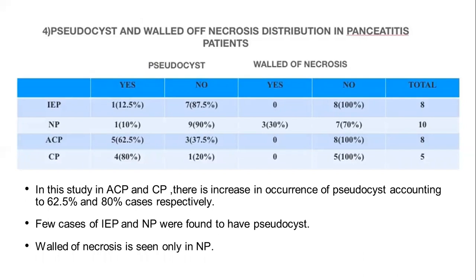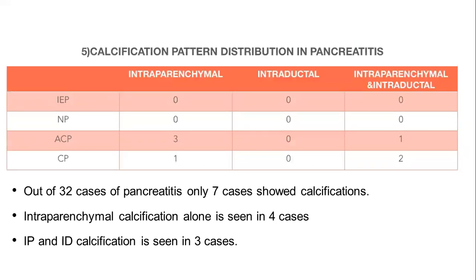Pseudocyst and wall of necrosis distribution in pancreatitis patients. In this study, acute on chronic pancreatitis and chronic pancreatitis show an increase in occurrence of pseudocyst, accounting for 62.5% and 80% of cases respectively. Few cases of interstitial edematous pancreatitis and necrotizing pancreatitis were found to have pseudocyst. Wall of necrosis is seen only in necrotizing pancreatitis. Out of 32 cases of pancreatitis, only 7 cases showed calcifications, in which intra-parenchymal calcifications alone are seen in 4 cases and both intra-parenchymal and intra-ductal calcification is seen in 3 cases.